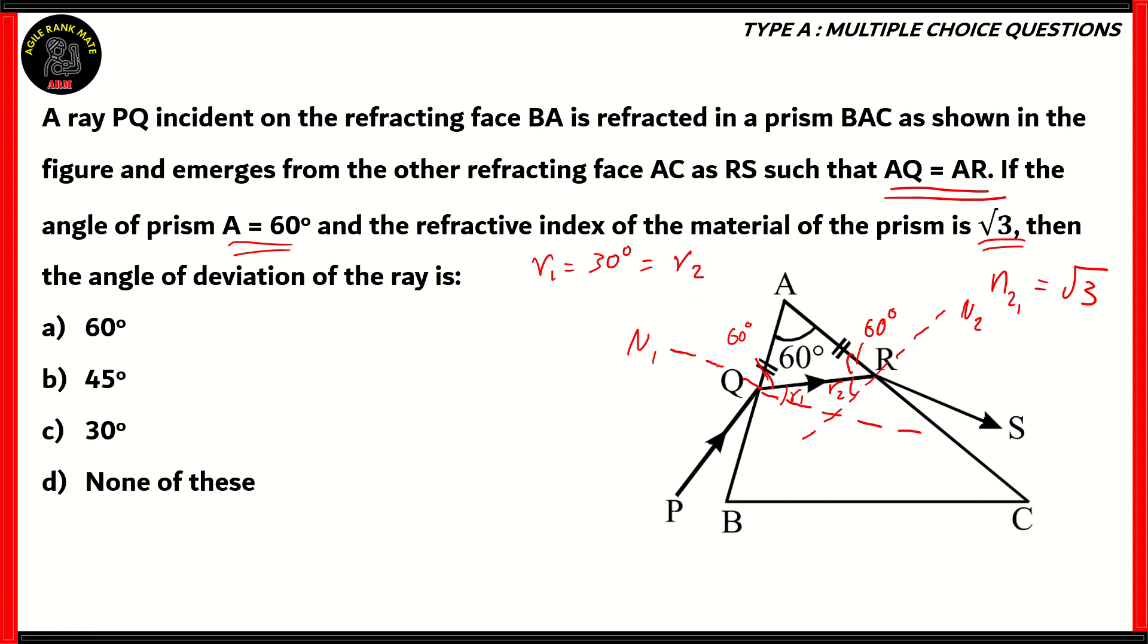Now, from here, we need to find out the angle of incidence and the angle of emergence. For that, we use the refractive index of the prism and find out the values using Snell's law. Now, according to Snell's law, sin i over sin r, or in this case r1, equals n21.